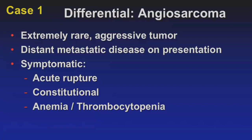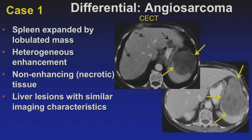Angiosarcomas are a very rare and aggressive tumor. The majority of patients present with metastatic disease at presentation, and these are almost never asymptomatic. Patients may present with acute rupture, constitutional symptoms such as weight loss and fatigue, or hypersplenism from anemia or thrombocytopenia. Here is a case of angiosarcoma — the spleen is expanded by a heterogeneous mass with areas of non-enhancing tissue corresponding to necrosis on pathology. There are also a couple of liver lesions with very similar imaging features, which were all metastatic lesions.